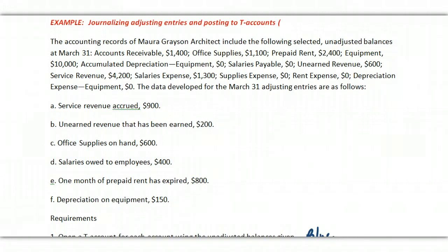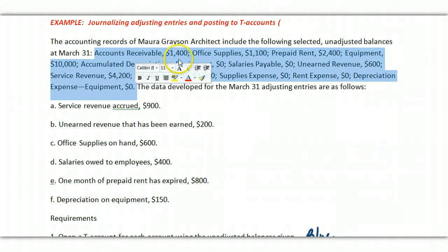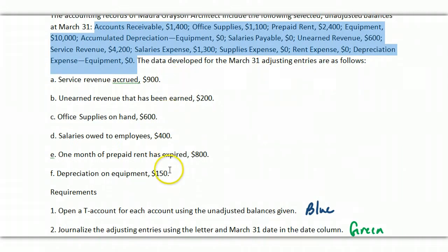Okay, let's look at this example, journalizing and adjusting entries and posting to the T-accounts. This is typical of any problem that you might see. To start with, we have a bunch of unadjusted balances, and then the data for the adjusting entries are listed here.